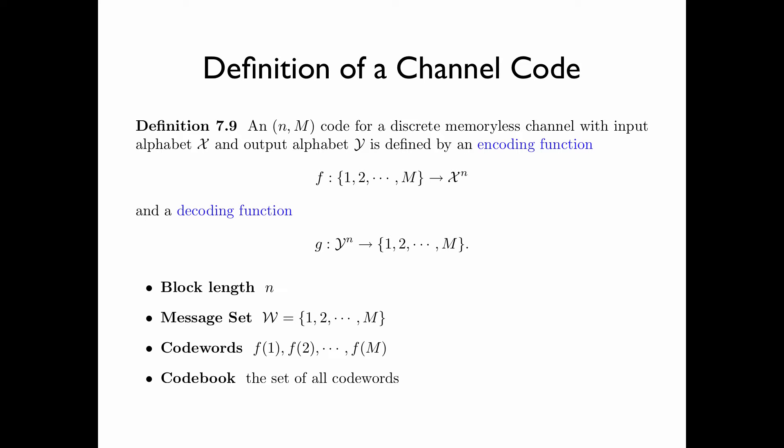In a channel code with block length n, the encoding function maps a message to a codeword of length n, and the codeword is sent through the channel. Upon receiving a sequence of length n at the output of the channel, the decoding function maps the sequence to a message in the message set.